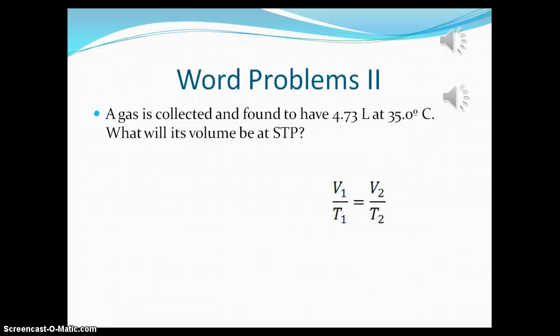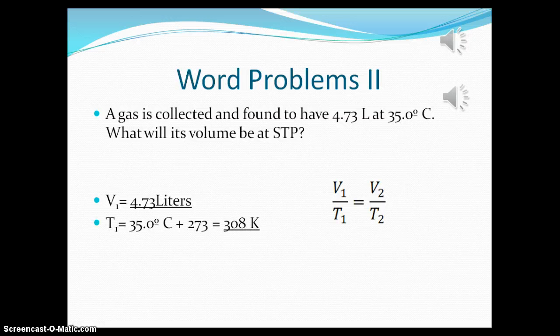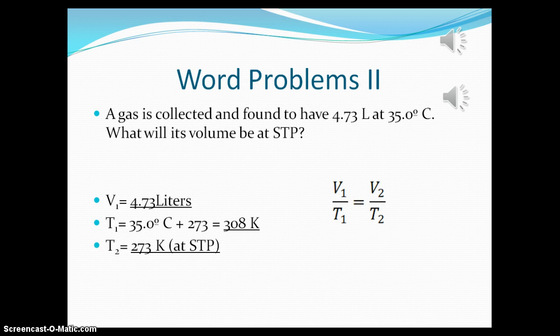Let's identify the different variables. V1 is going to be the 4.73 liters, liters being volume, and T1 is going to be 35 degrees Celsius. But wait, there's more. So we need to convert that 35 degrees Celsius into Kelvin. So 35 plus 273 equals 308. T2 is going to be your temperature at STP, which is 0 degrees Celsius or 273 Kelvin. And your V2 is unknown, so that's what we're going to solve for.